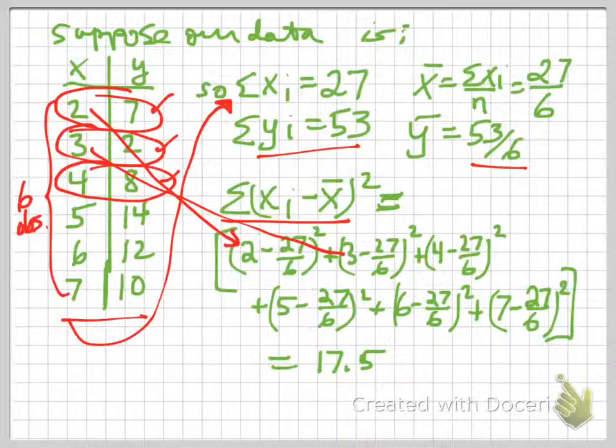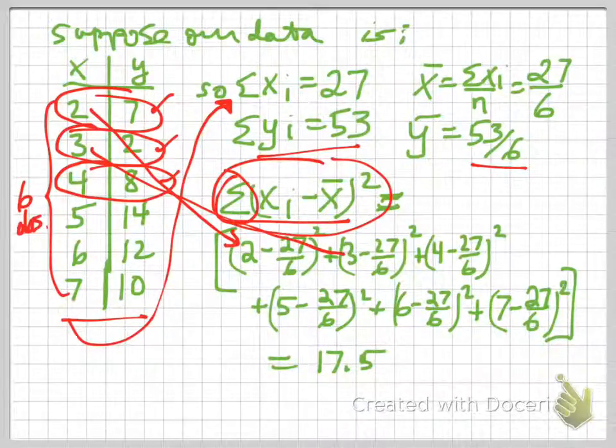So it's xi minus x-bar, squared, summed over each one of the values, each one of the observations, each one of the x's. And if you do that calculation, you get something like...